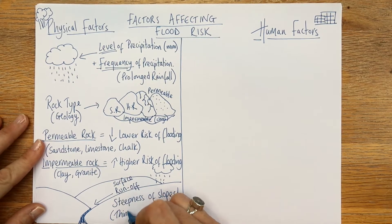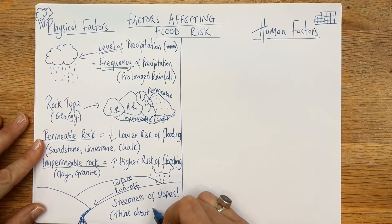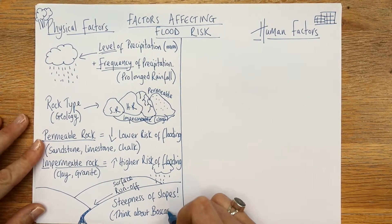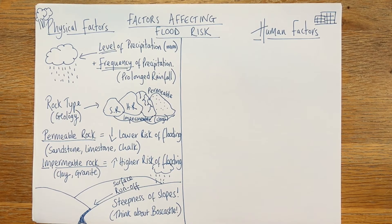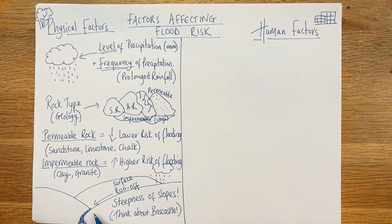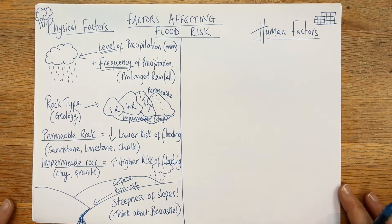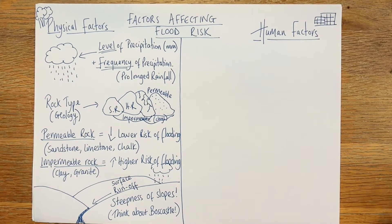Think about the case study here: Boscastle. That was a lovely little village in an area of very steep slopes that had an enormous amount of rain in 24 hours, causing a flash flood. The steeper the slope, the bigger the likelihood of a flood event. Those are your physical factors.